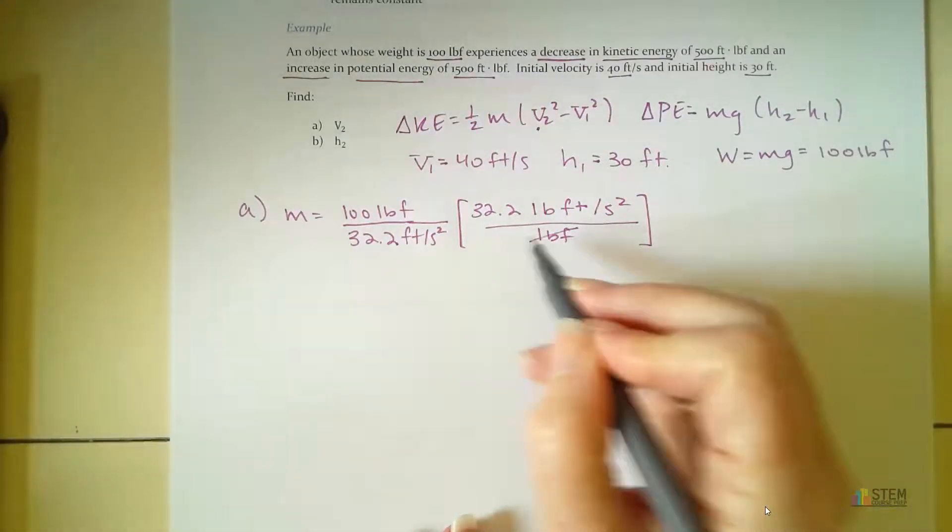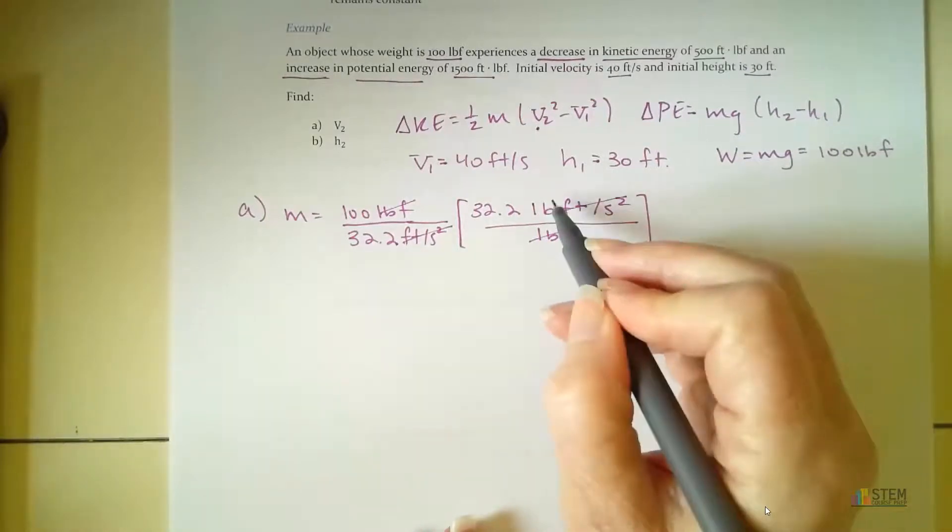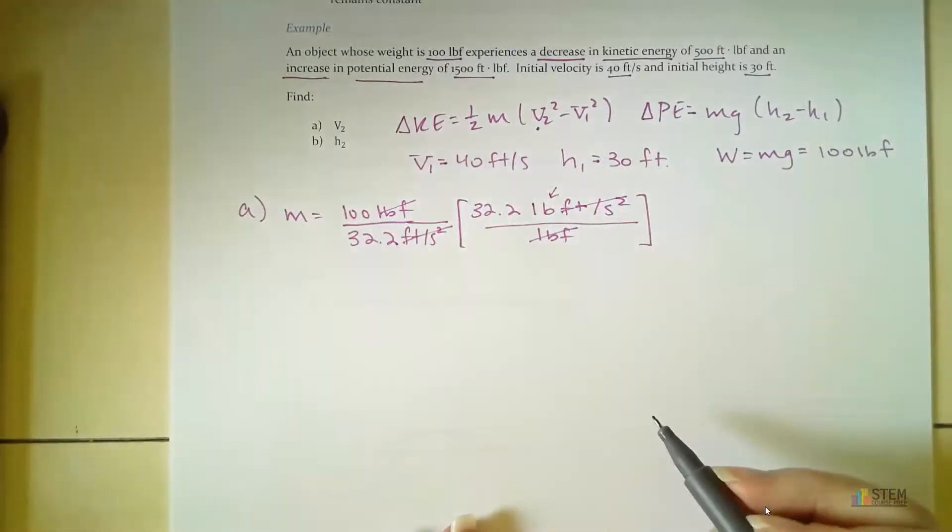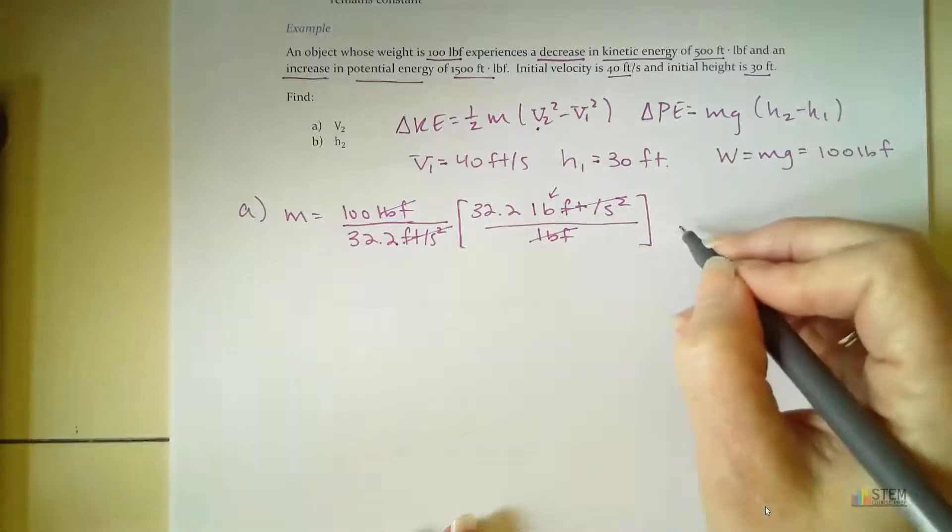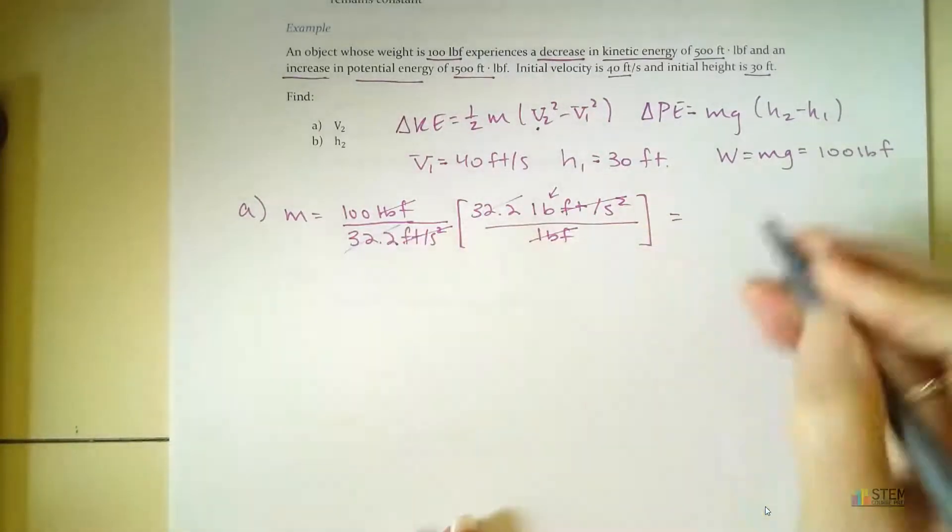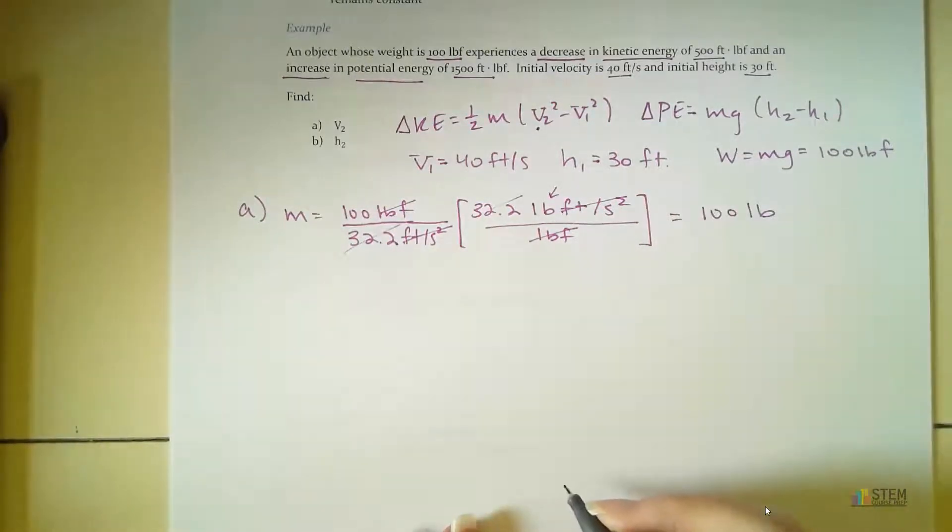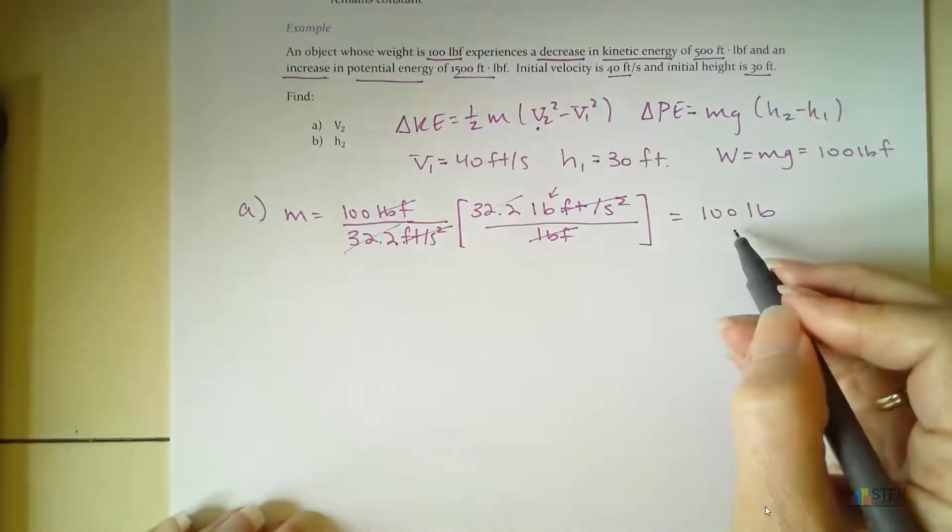Now, if you look, pound force cancels out. Feet per second squared cancels out. You're left with pounds, which is a unit of mass, which is what we want. So essentially, once you cancel those two out, you end up with 100 pounds. So your 100-pound force is the same as 100 pounds for mass. A little weird, but that's how it works out.